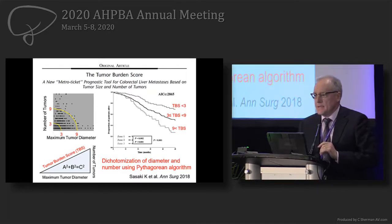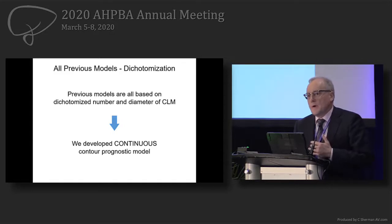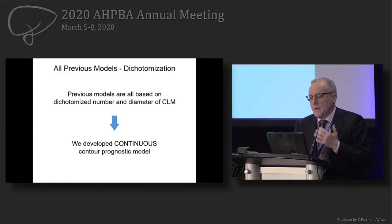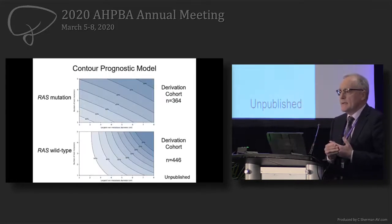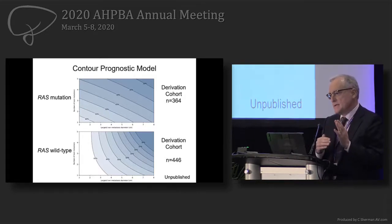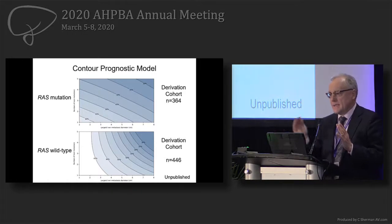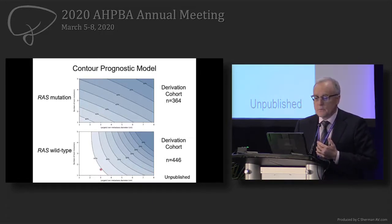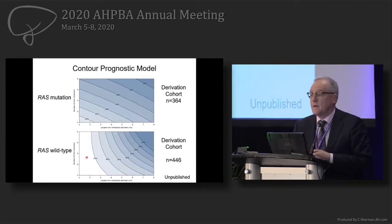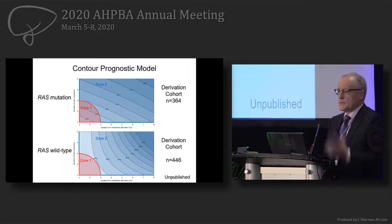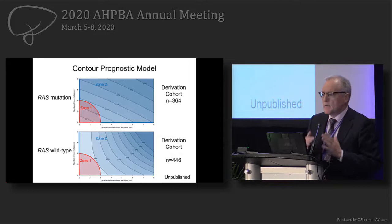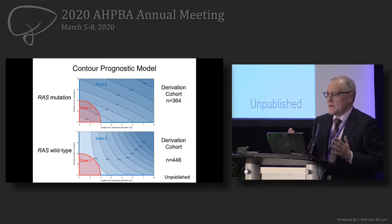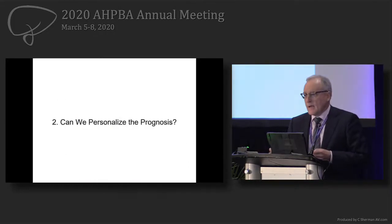We are now proposing a contour method, which we think is a more adequate way to stratify patients — not only by size and number of tumors, but also by mutations. It's based on a continuous variable, not dichotomization. Patients with wild type, five tumors less than two centimeters, show greater than 65% five-year survival. This is very different from patients with RAS mutation. Using the zones proposed by Sasaki and Pollack, zone one has a much better prognosis in the RAS wild type.